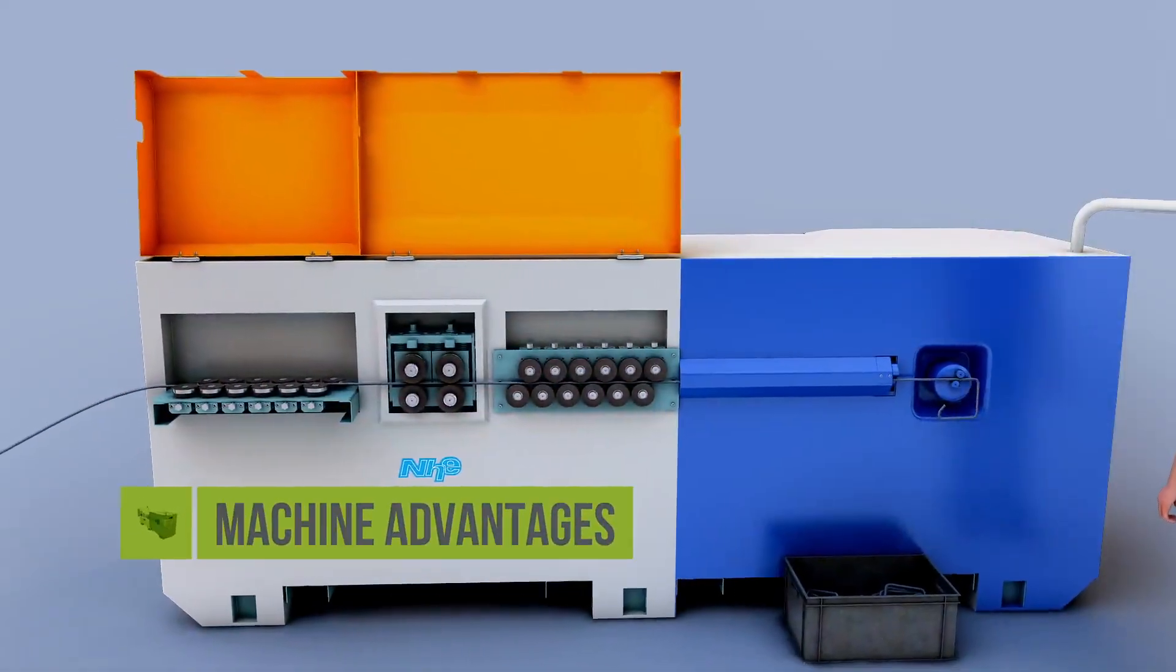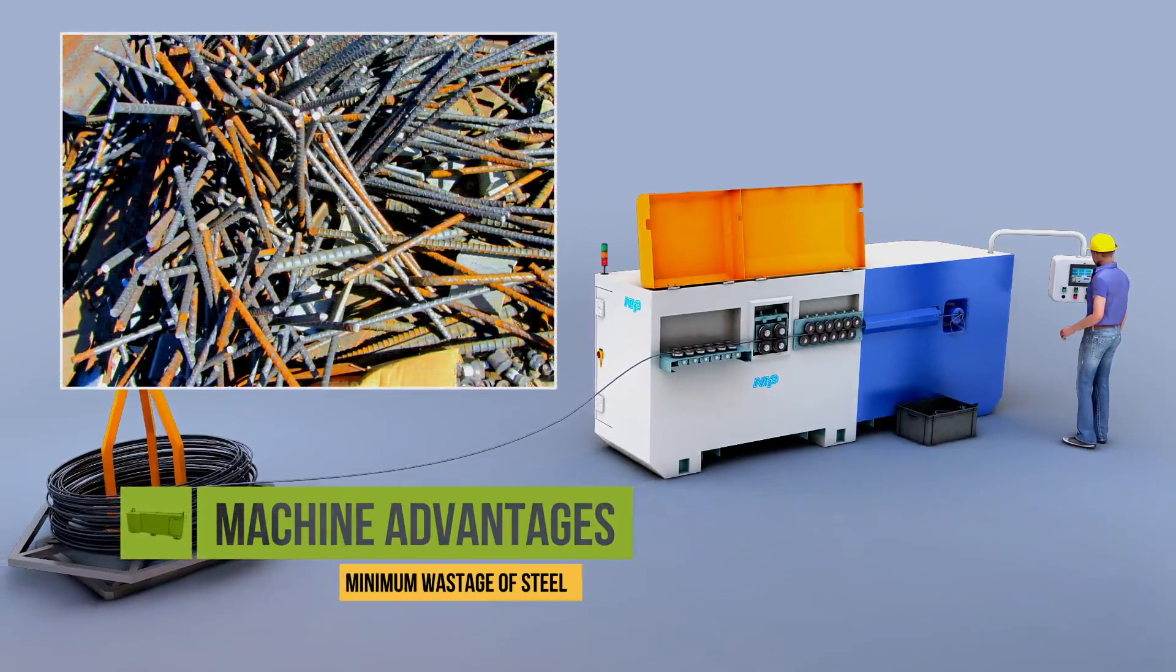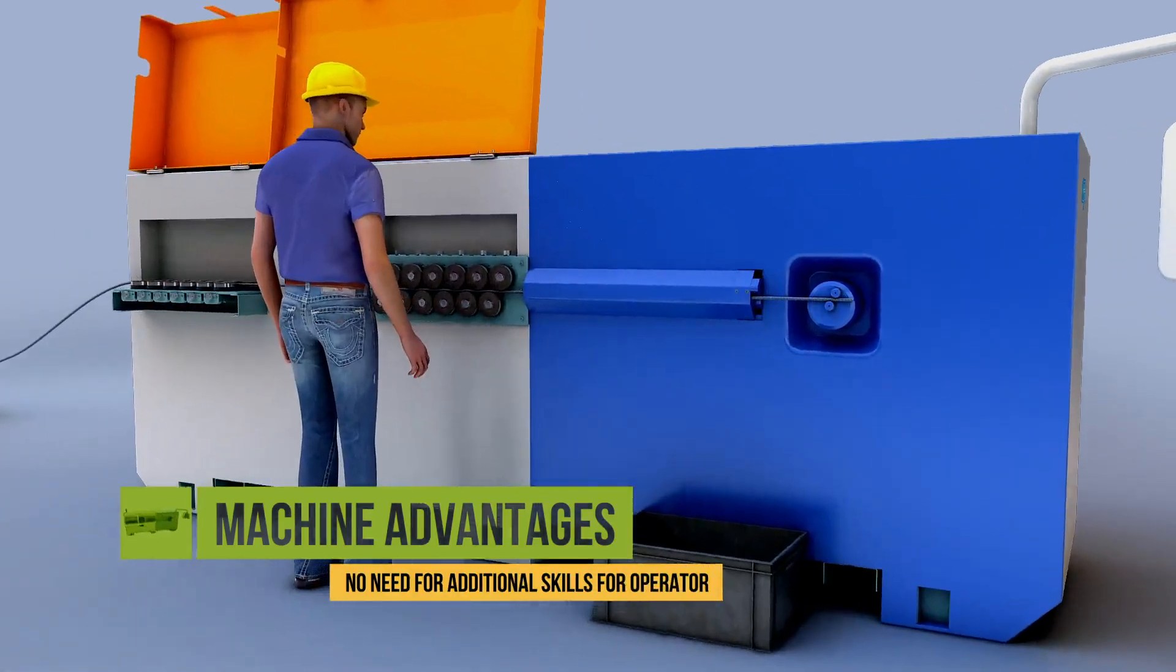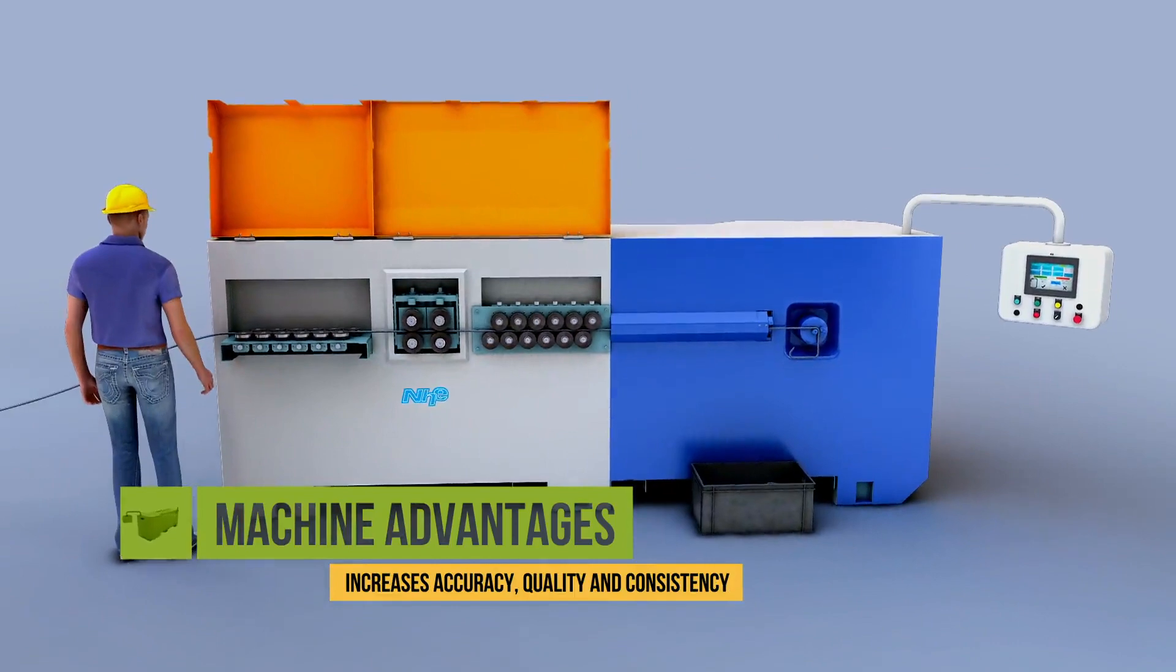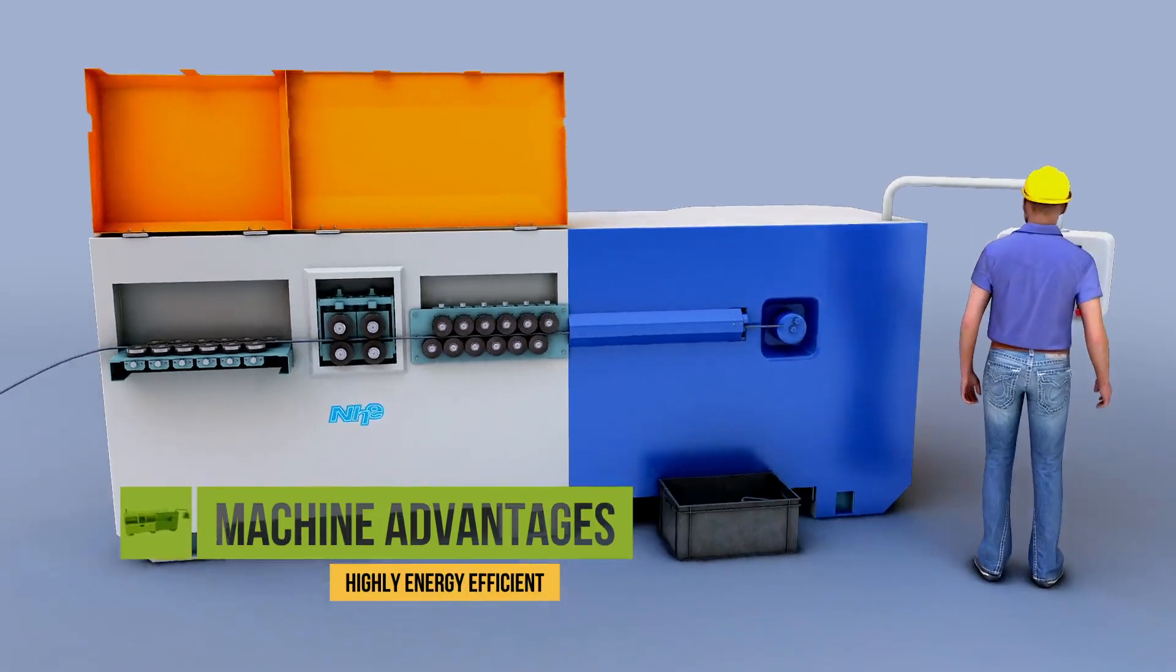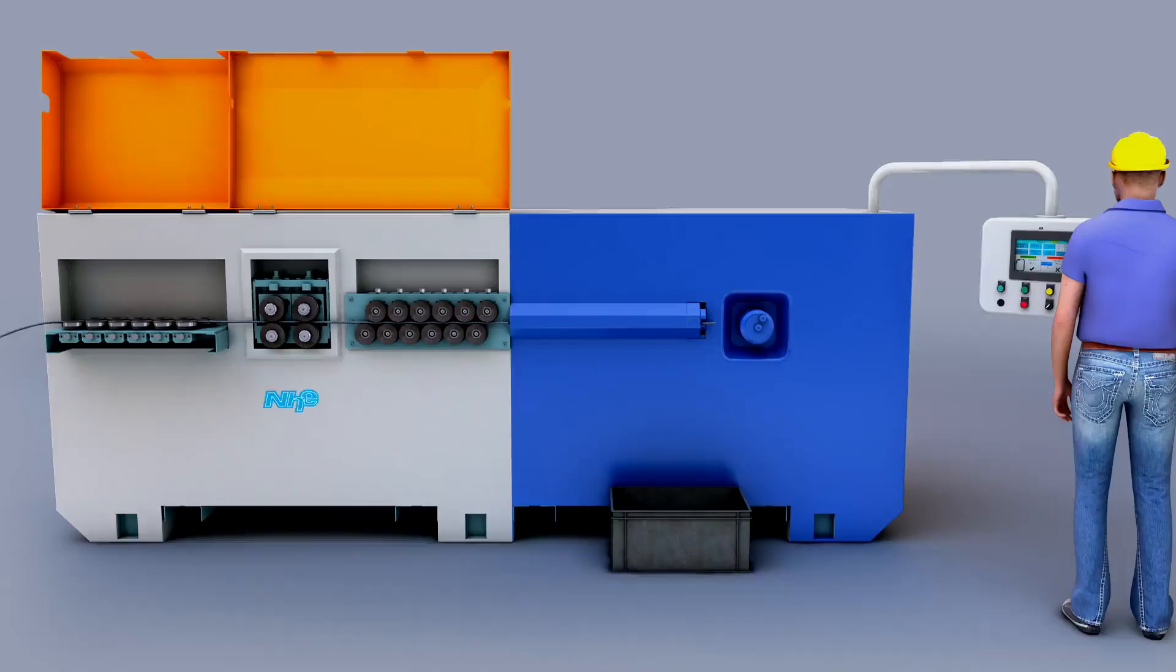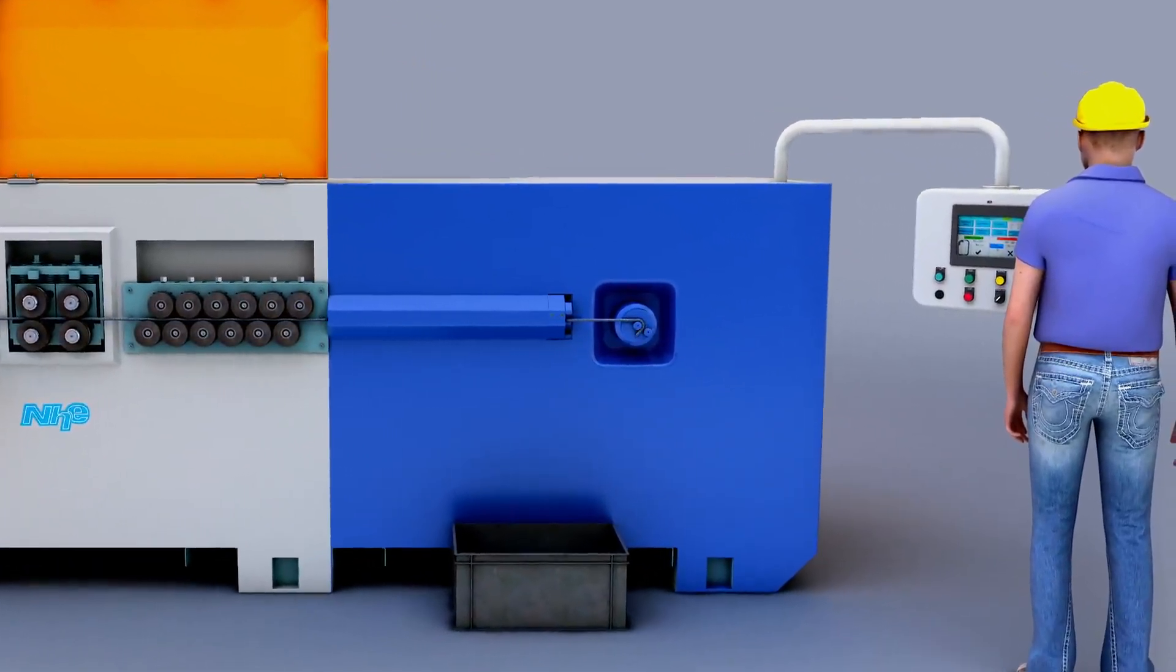Our machine offers a range of advantages to our customers. These include minimum wastage of steel, minimum manpower, no need for additional skills for operator, and increases accuracy, quality, and consistency in the production of the rings. It is also highly energy efficient. If the demand increases, the machine can be run for more shifts which would produce five to six times the regular output by a single person in one shift.